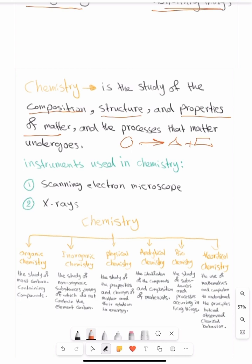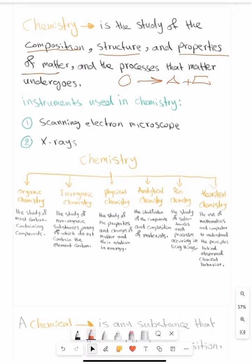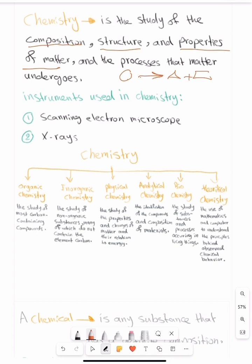Sometimes in chemistry we use instruments. In your book they have mentioned two types of instruments. Number one, scanning electron microscope. And number two, x-rays. So only know the examples of the instruments that are used.